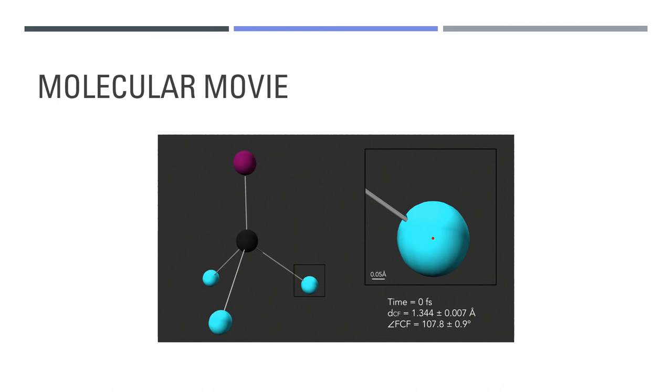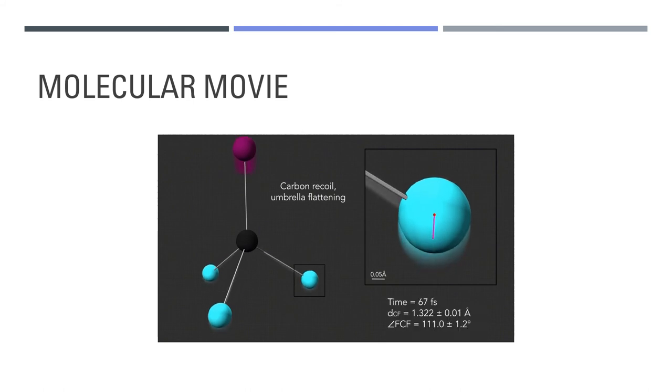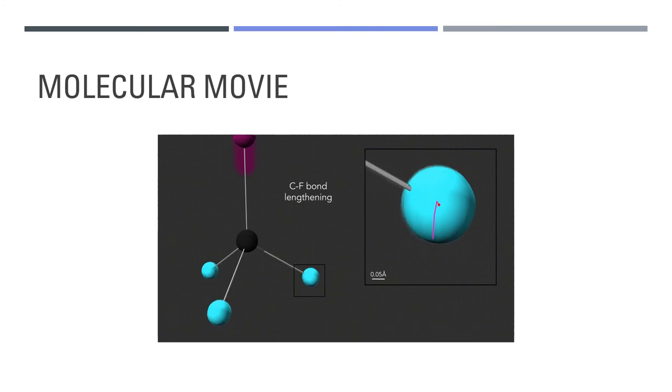By comparison with the AIMS simulation, this time delay is within reasonable agreement. Using information from the perpendicular pair distribution function, the team was able to construct a molecular movie showing the full structural changes after photodissociation. We can see the fluorine-carbon-fluorine angle immediately opens up, followed by the CF bonds lengthening with a time delay between them. This is also seen in the AIMS simulations.